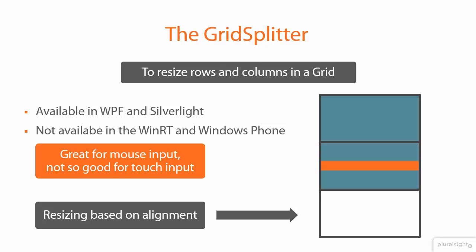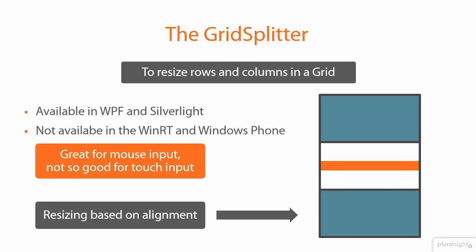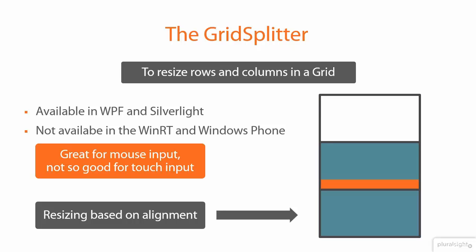Now when you center your GridSplitter, it will resize the first and the third row, or in general, the previous and the next cell. You will have the same effect when you set vertical alignment to stretch. Now you can already imagine what will happen when you vertical align your GridSplitter to the bottom — it will resize the current and the next cell.